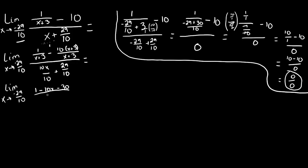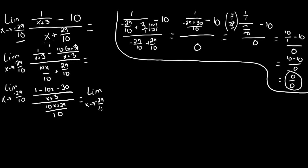This is all over x plus 3, and the denominator combines into one fraction: 10x plus 29 over 10. So the numerator simplifies — 1 minus 30 gives us negative 29, minus 10x — over x plus 3. And this whole thing is over 10x plus 29 over 10. We can simplify this down one more step just to make it easier on ourselves.